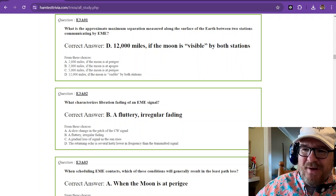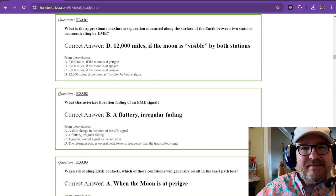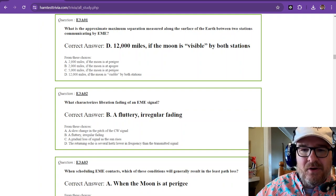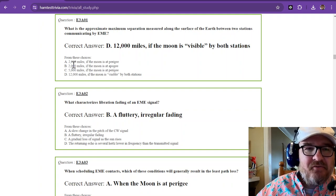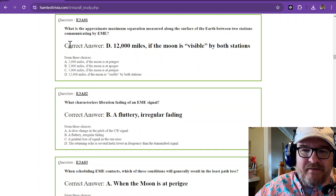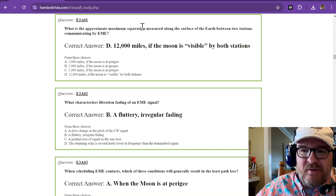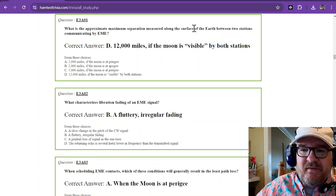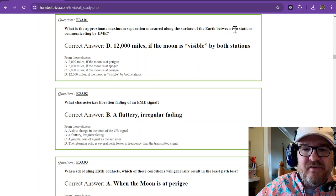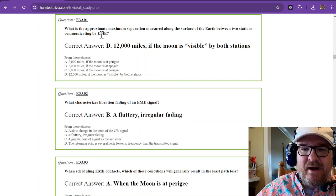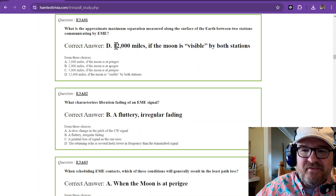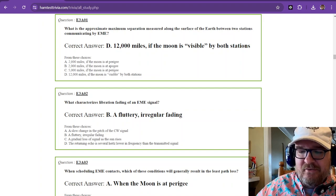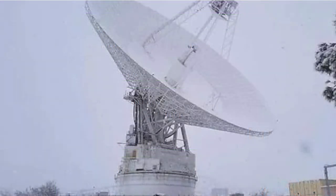Hey there and welcome back to the Amateur Extra License Exam, Element 4. We're in sub-element 3-alpha. What is the approximate maximum separation measured along the surface of the Earth between two stations communicating by Earth-Moon-Earth? The answer is 12,000 miles if the Moon is visible by both stations.